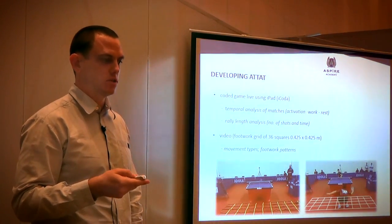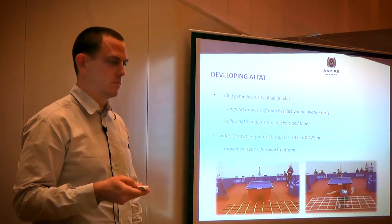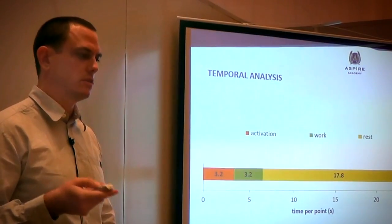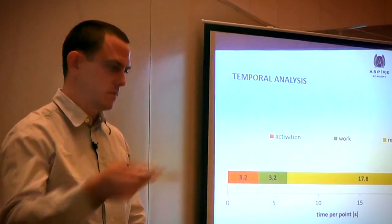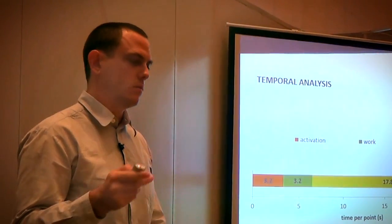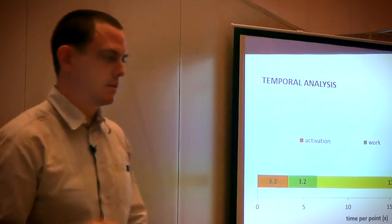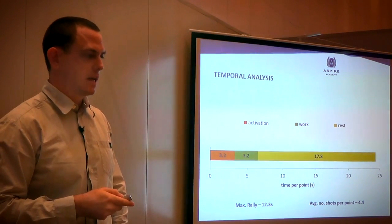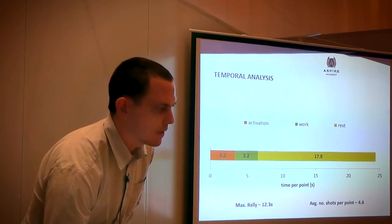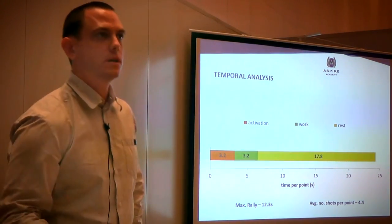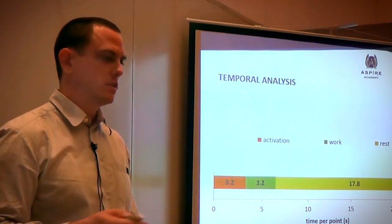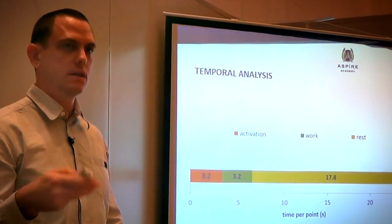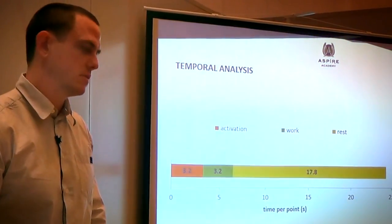The results we found: from a temporal analysis we saw work in the literature relating to senior players but we're dealing with a junior cohort so we wanted to make sure we got information relating to juniors. The activation period refers to that isometric calf squat position when the player is waiting for the ball at the start of the rally. The average number of shots per point was just over four. It was important to have that information so we can relate the test to table tennis.